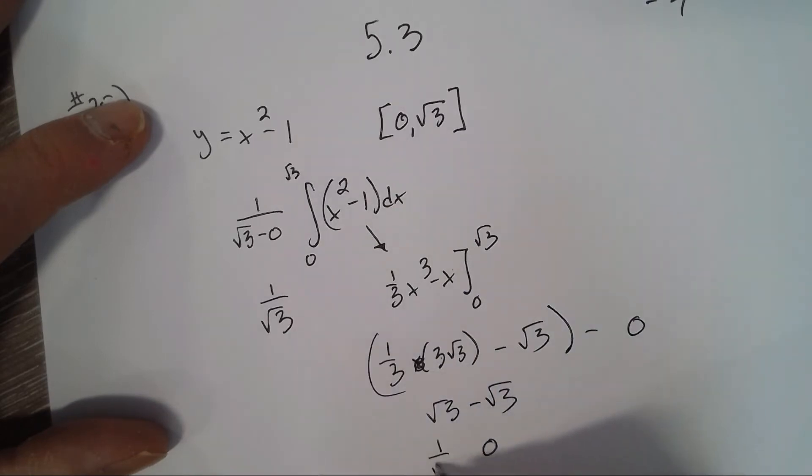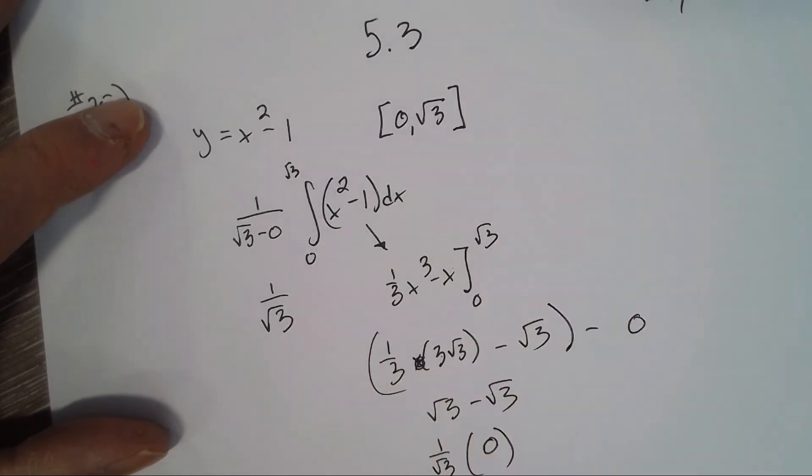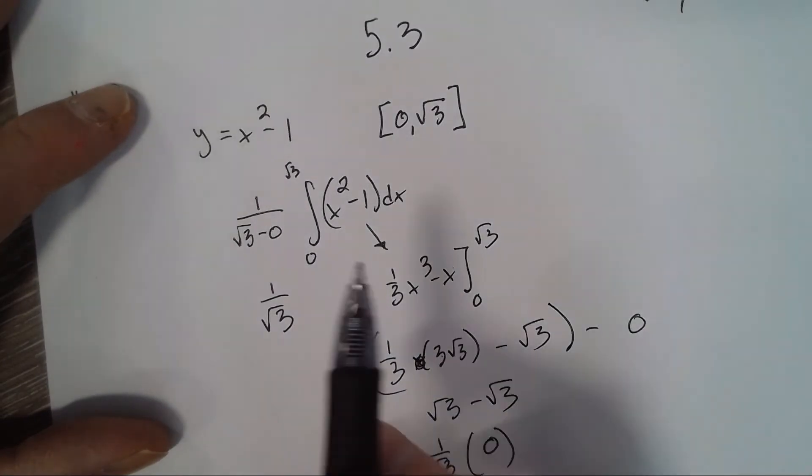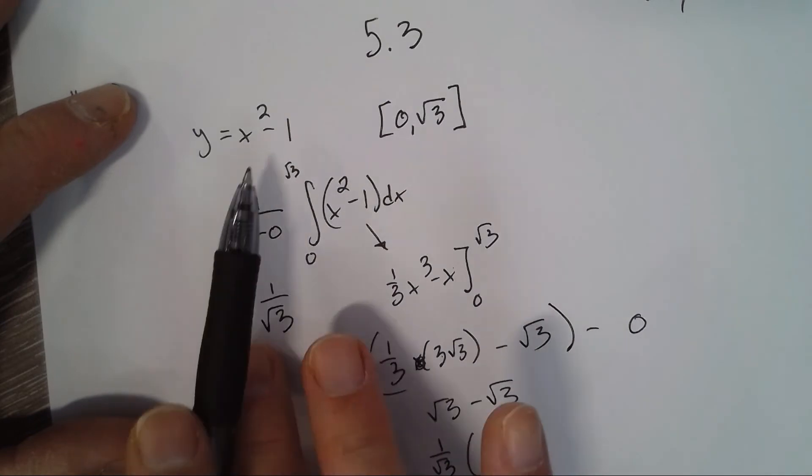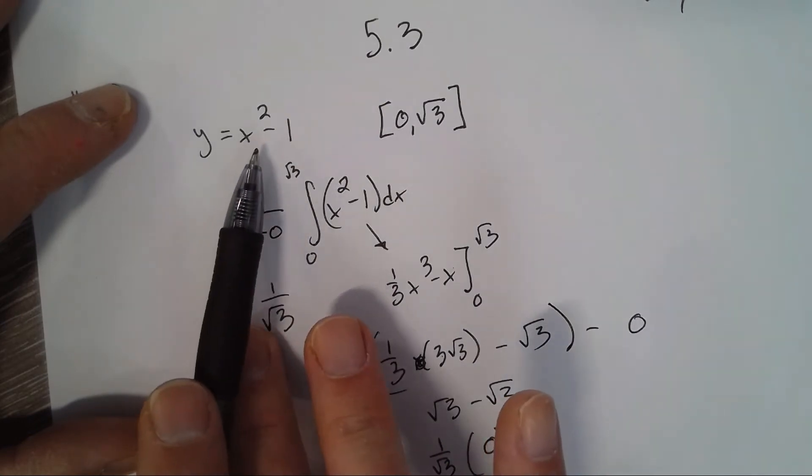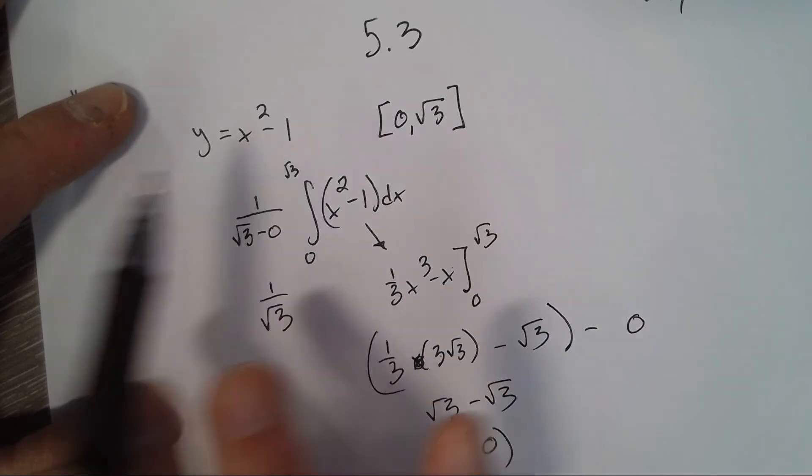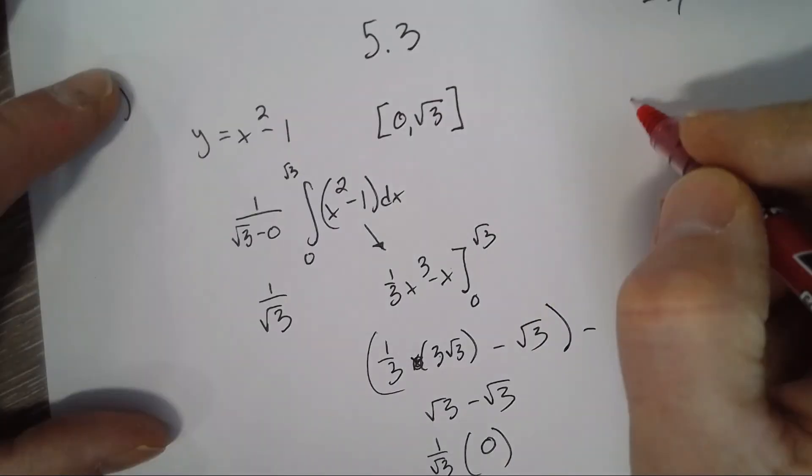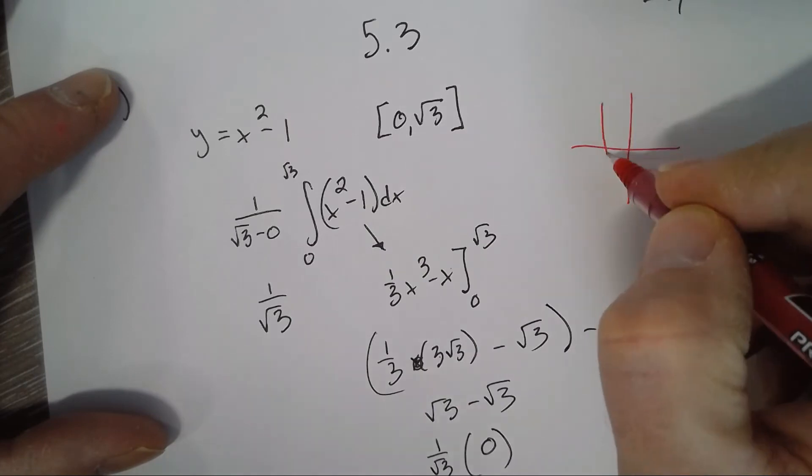All right, so what's that tell you? Between 0 and square root of 3, the average value of that parabola is 0. So graphically what does that mean? If we look at the graph of y equals x squared minus 1.